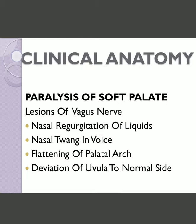Another condition of the soft palate is paralysis of the soft palate, which occurs due to a lesion of the vagus nerve. Symptoms include nasal regurgitation of liquids — liquids drunk from the mouth come out of the nose — and a nasal twang in the voice. The palatal arches, both palatoglossal and palatopharyngeal, will not be arched and will appear flat. The uvula will deviate to the normal side.